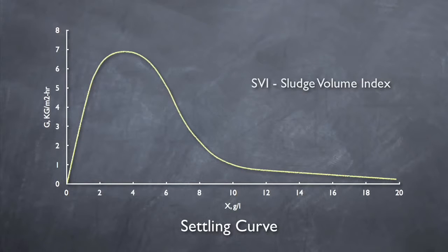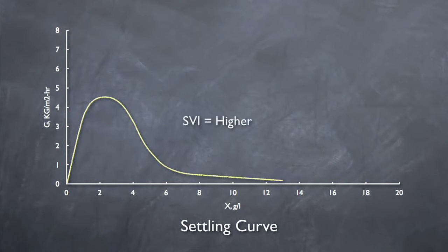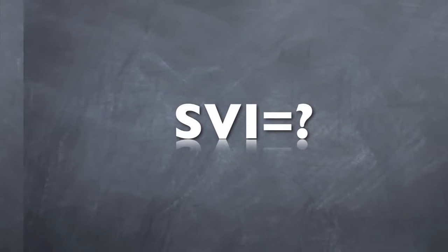A smaller SVI, which represents faster settling, results in a larger settling curve. A higher SVI, which represents slower settling, results in a smaller settling curve. So what does it matter if the curve is larger or smaller? Well, we'll find that out in a minute. But now that we know that SVI is important in determining the settling curve, how do we determine the SVI, and what causes it to change?